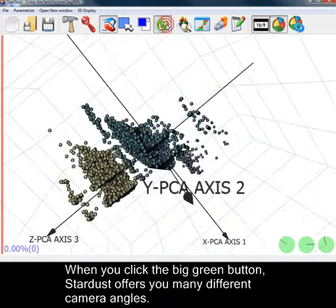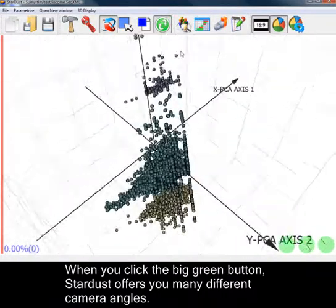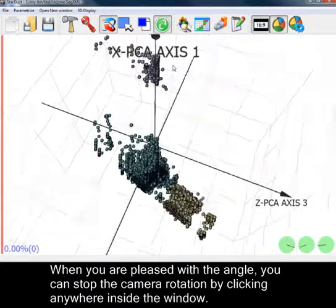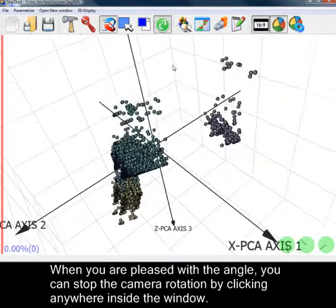When you click the big green button, Stardust offers you many different camera angles. When you are pleased with the angle, you can stop the camera rotation by clicking anywhere inside the window.